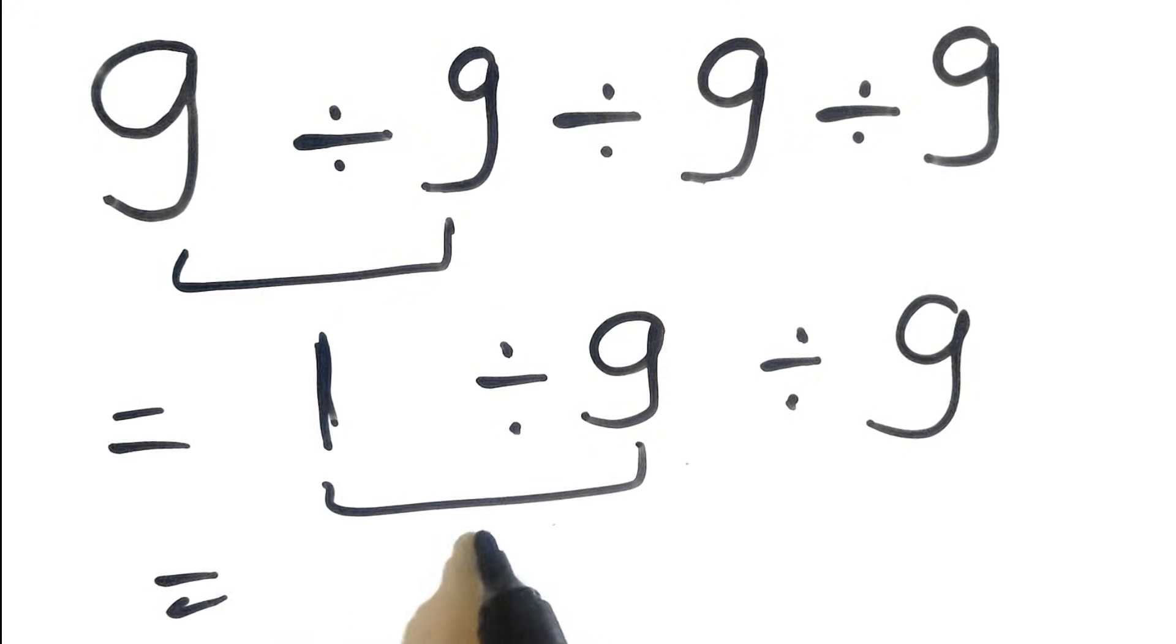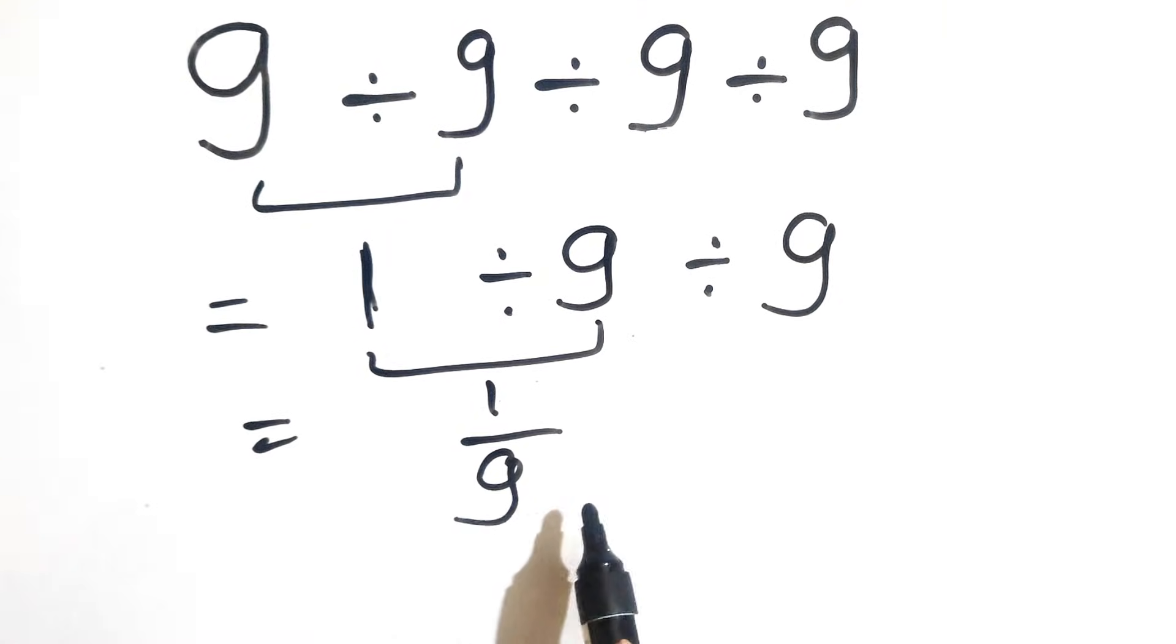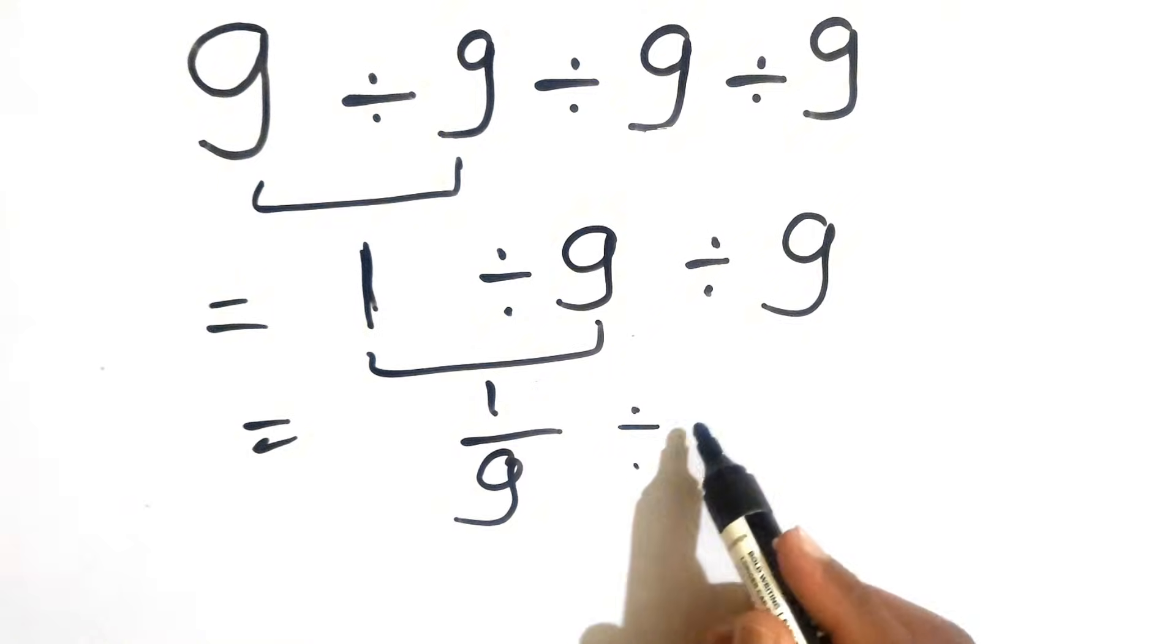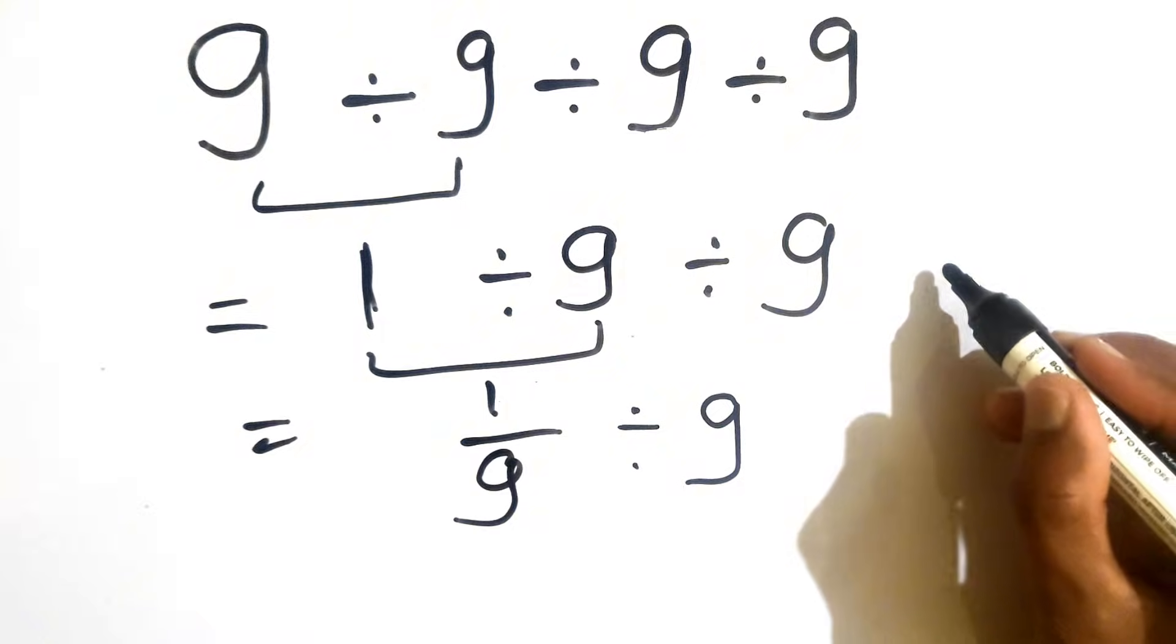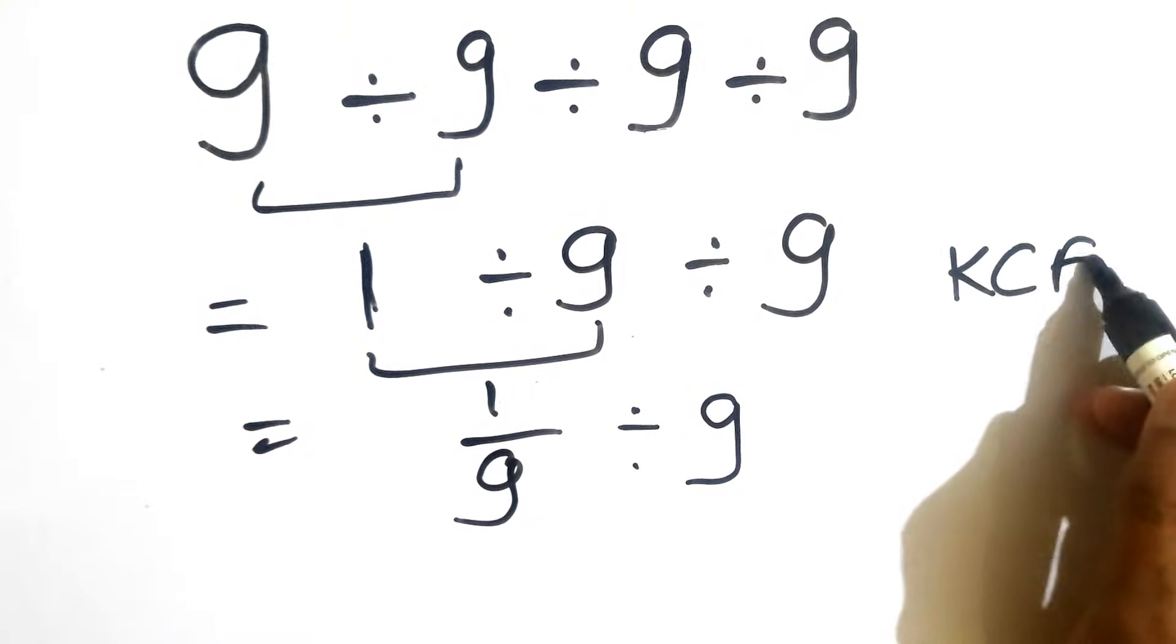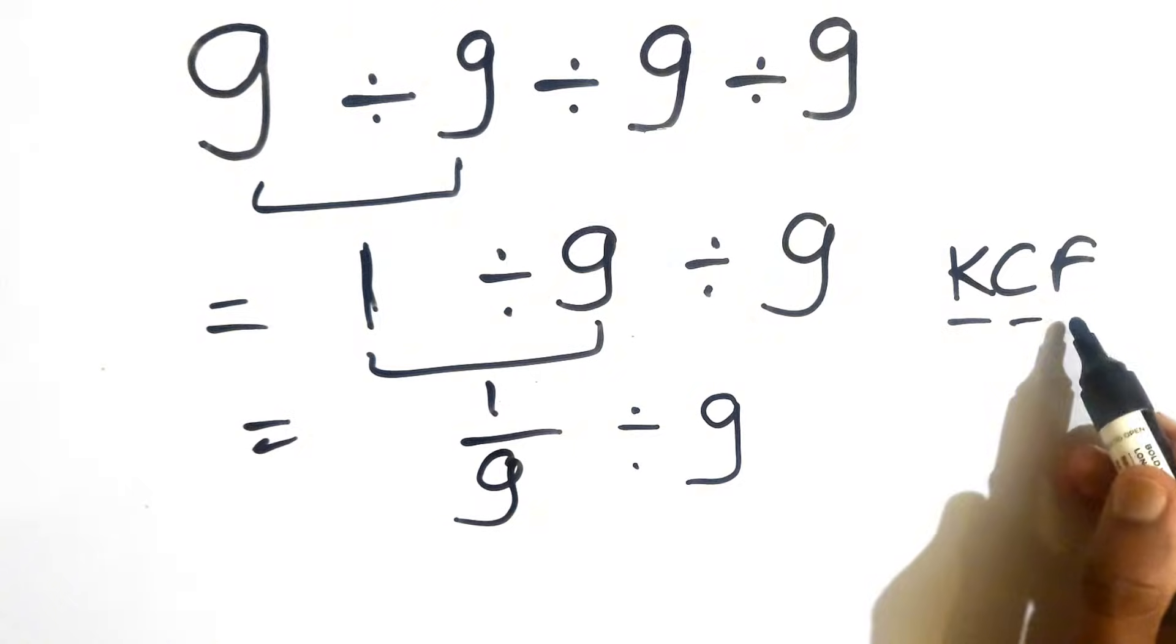1 over 9, so like 1 over 9, and we can write this divided by 9. Now here we need to use one rule that is also called as the KCF rule, which stands for Keep, Change, and Flip.